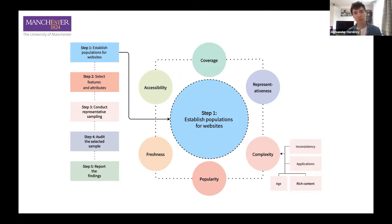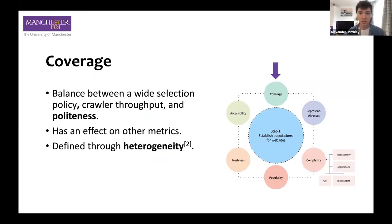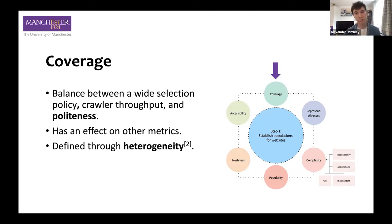These six stages address some concerns we have with WCAG EM. Some steps produce quantifiable numerical metrics we can use to compare things, and others produce less quantifiable, more qualitative metrics — for example, representativeness. Starting with coverage: coverage strives to balance the selection policy, the crawler throughput, and politeness for web crawlers. For web crawlers or pages sourced from them, that's what it's concerned about.